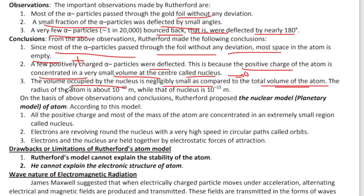The radius of the atom is about 10 raised to the power of minus 10 meters, while that of the nucleus is 10 raised to the power of minus 15 meters.